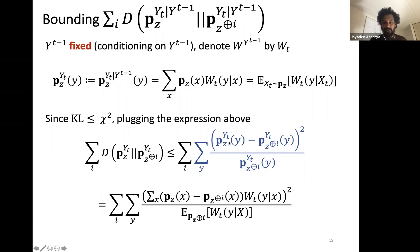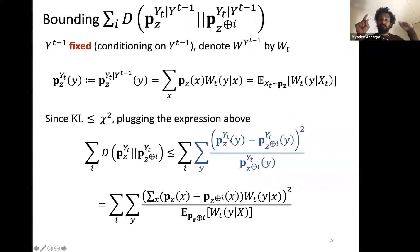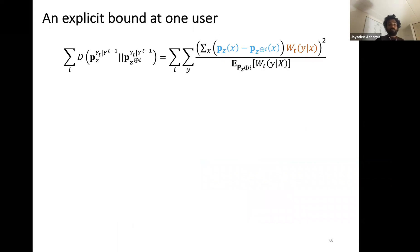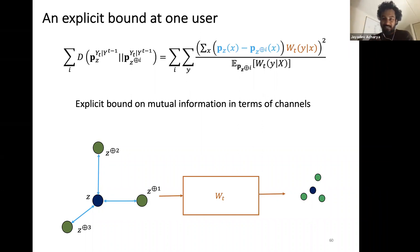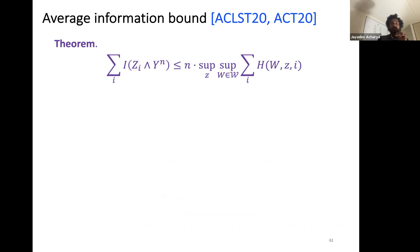Plugging all of this together, by taking the supremum over coordinates and over channels, you can rewrite the bound on mutual information in a clean form. This explicit expression characterizes how information constraints (through the channel w_t) limit what can be learned about z, and forms the basis for the chi-square contraction lower bounds.